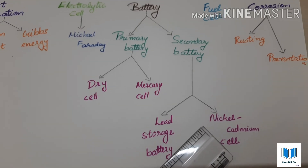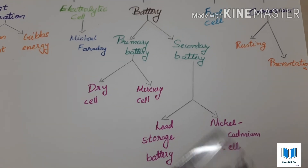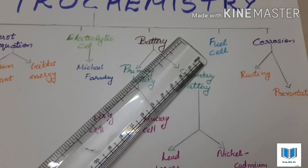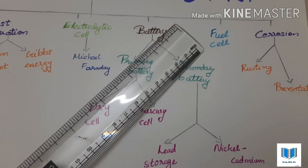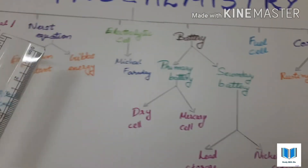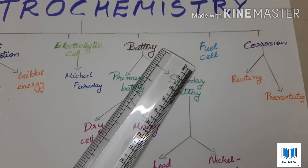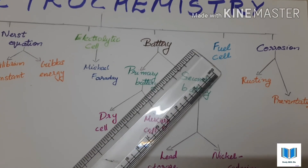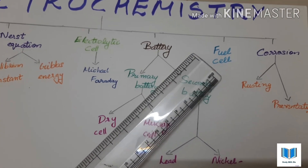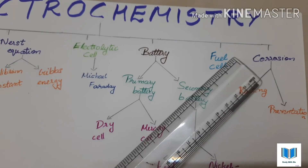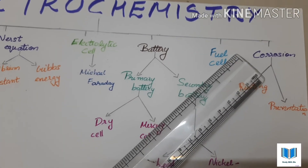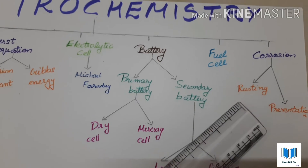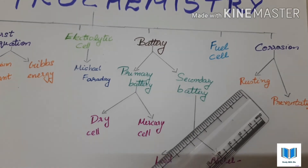Next comes fuel cell. Fuel cell is an important topic, like the Nernst equation — often asked for writing short notes. Then comes corrosion, the last topic of the chapter Electrochemistry. Under corrosion we have two phenomena.